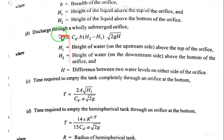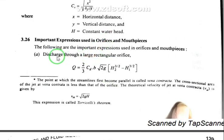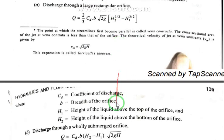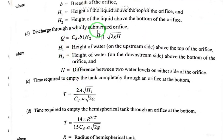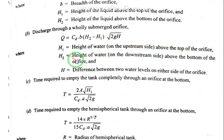Now for discharge through a wholly submerged orifice, the formula is: Q equals Cd times b times (h2 minus h1) times square root of 2gH. Here h1 is the height of the water above the top of the orifice, h2 is the height of the water above the bottom of the orifice, and H is the difference between the two water levels on either side of the orifice.